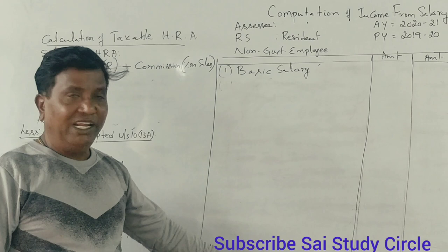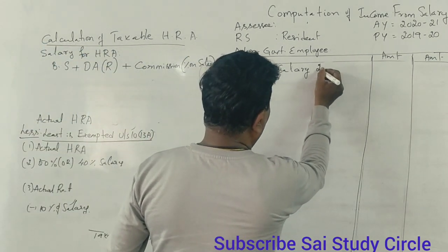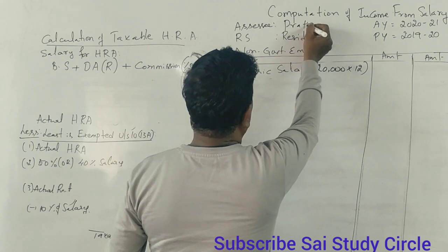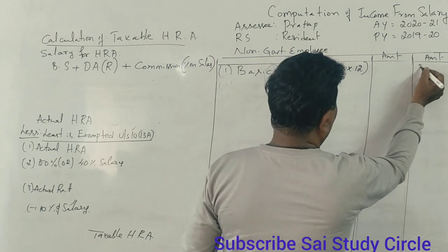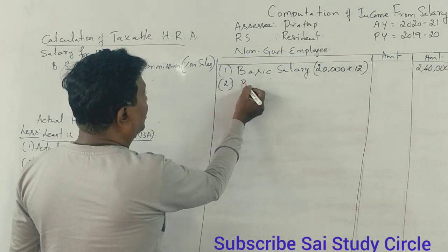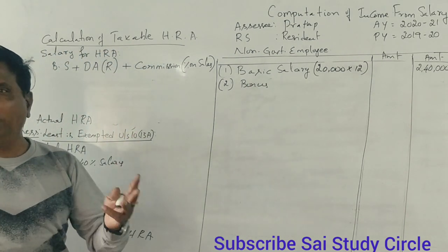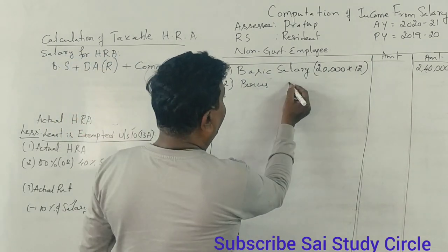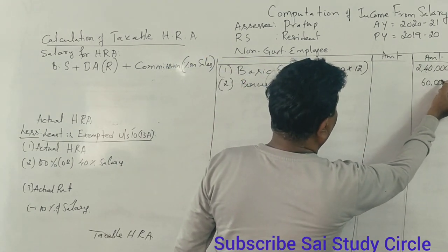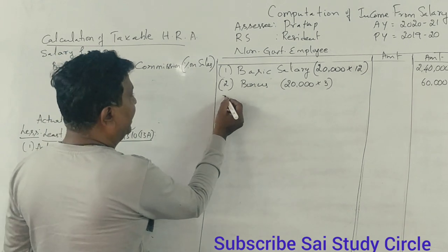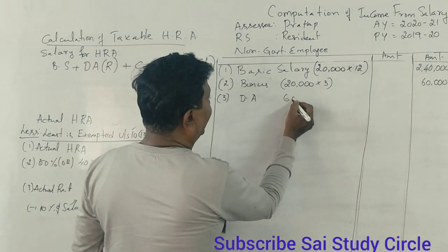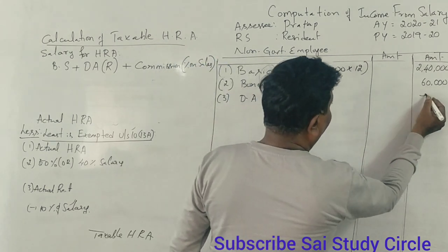Now we calculate the gross salary. Basic salary is Rs. 20,000 per month, so for 12 months it comes to Rs. 2,40,000. Dearness allowance is Rs. 6,000 per month, and for 12 months it will be Rs. 72,000.